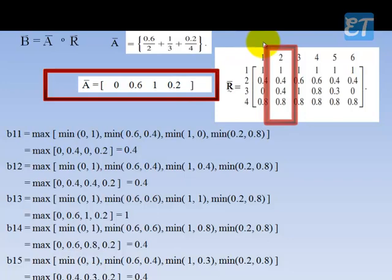For B2, using this row and the second column: min of 0.6 and 0.4 is 0.4; min of 1 and 0.4 is 0.4; min of 0.2 and 0.8 is 0.2. The maximum is 0.4.